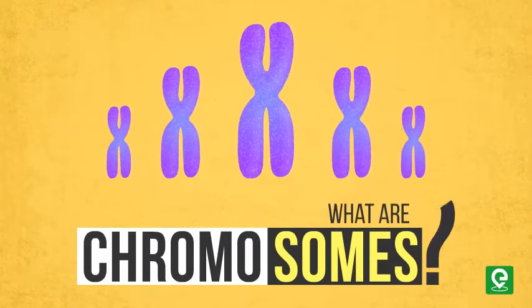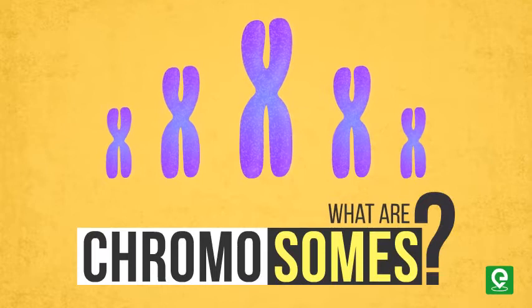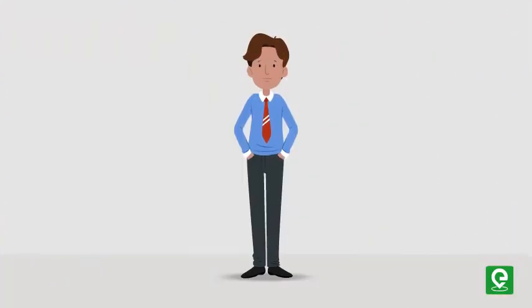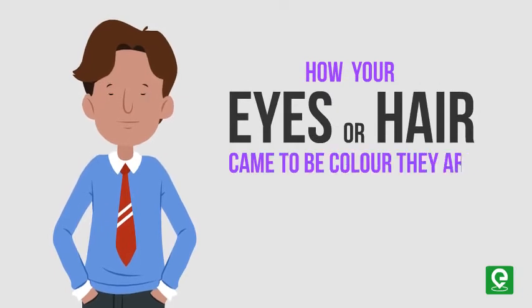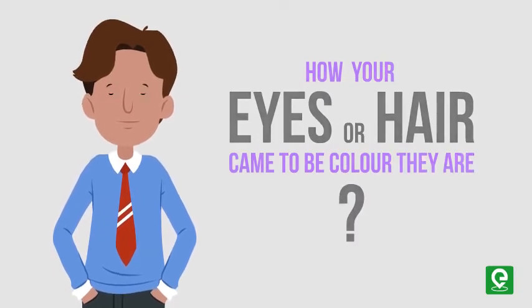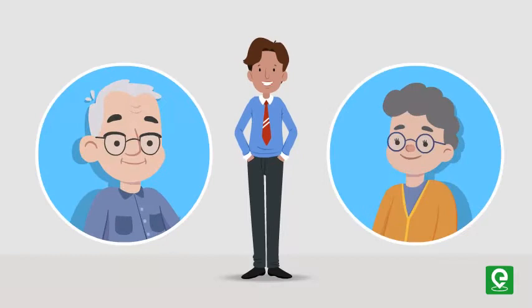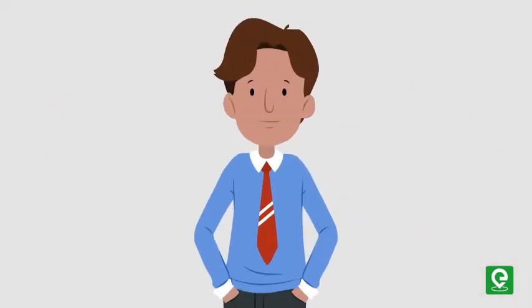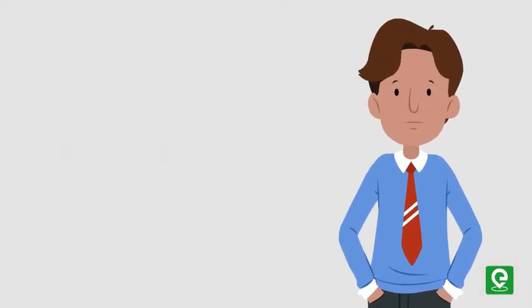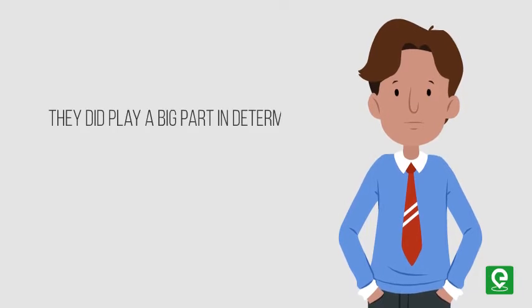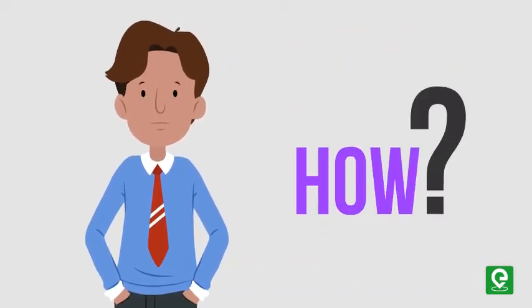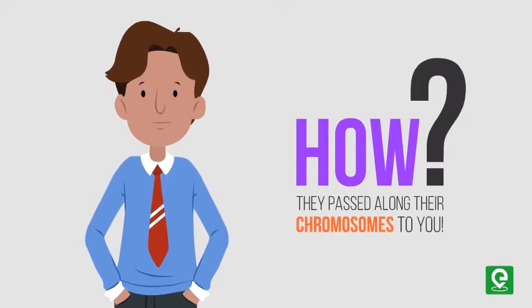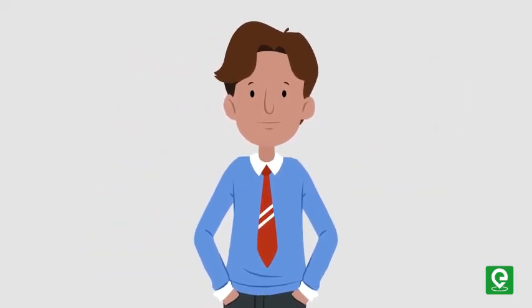What are chromosomes? Have you ever wondered about how your eyes or hair color came to be? Did your parents pick out the color of your eyes? Not exactly, but they did play a big part in determining their color through the chromosomes they passed along to you. In this video we will learn about the structure and types of chromosomes.